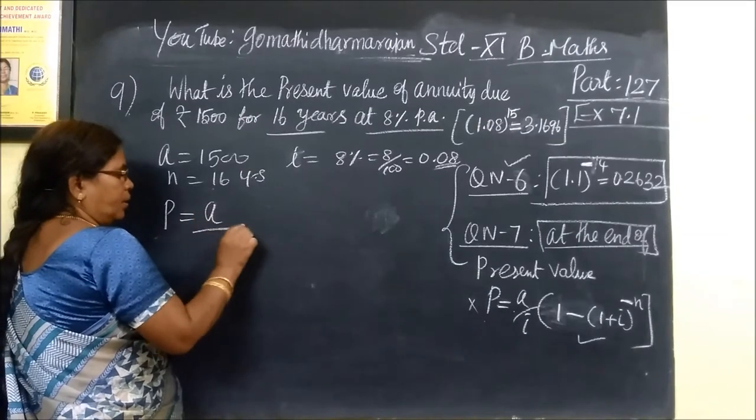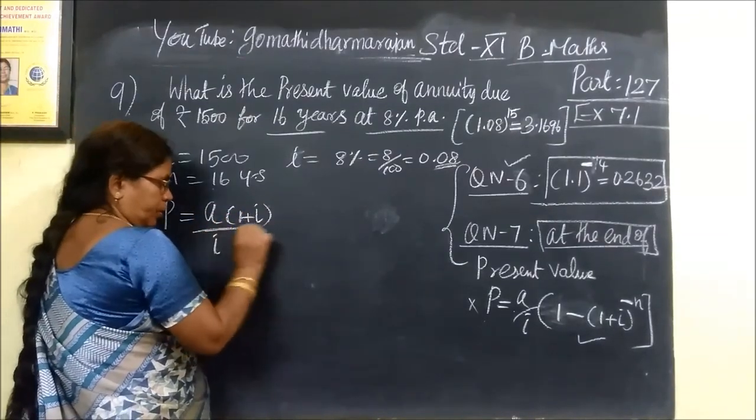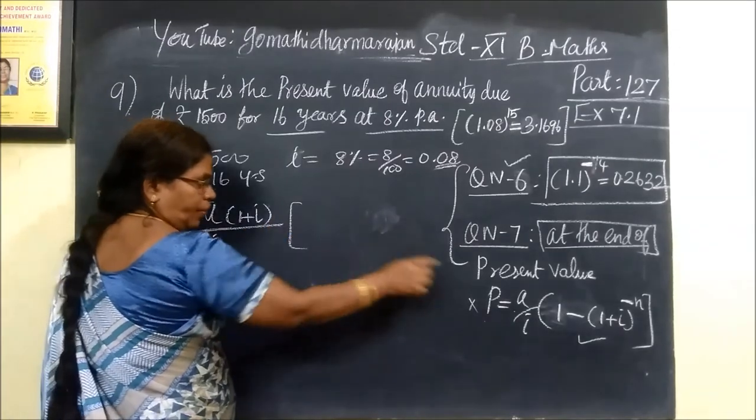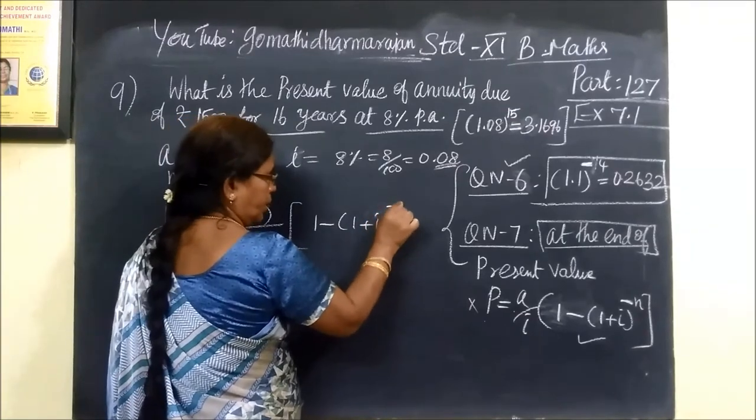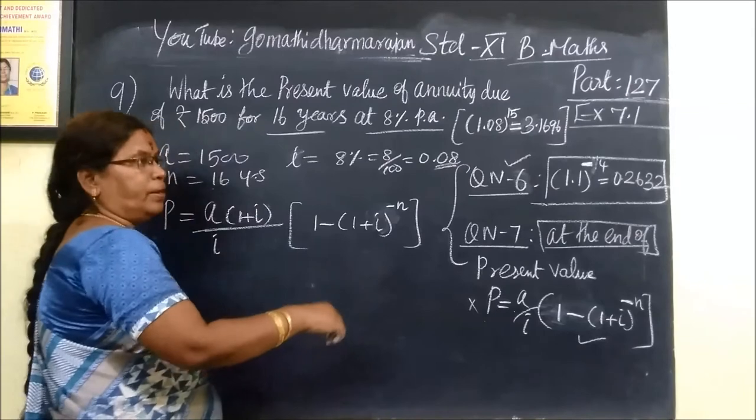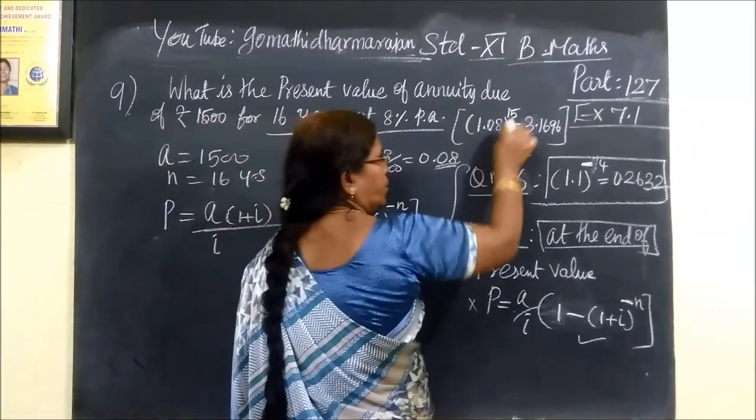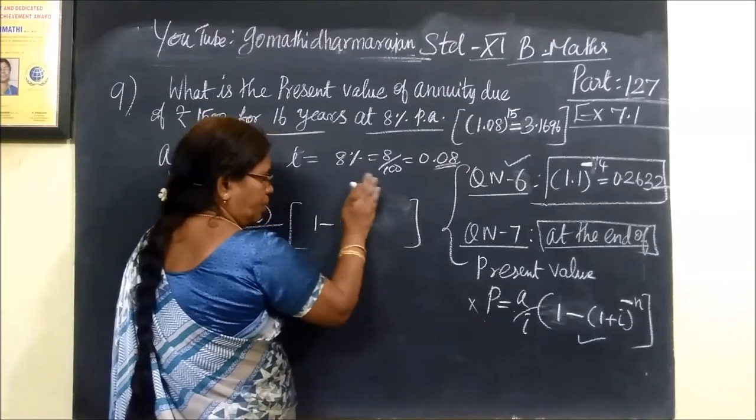Then we will use the formula A by I, this formula is 1 plus I. This formula is 1 minus 1 plus I. This formula is 1 plus I, let us put this formula.